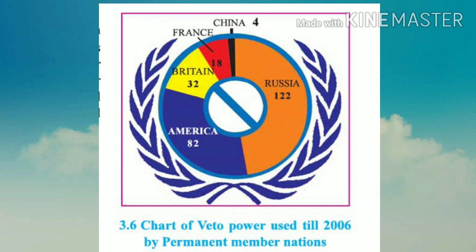The second organ is the Security Council. Here is a chart of the veto power, which is used by various nations. Veto power is something that these permanent nations can use at any time in the Security Council of the United Nations to stop any legal actions. In simple words, these nations depicted in the chart can say 'no' even when the world's member nations are agreeing.